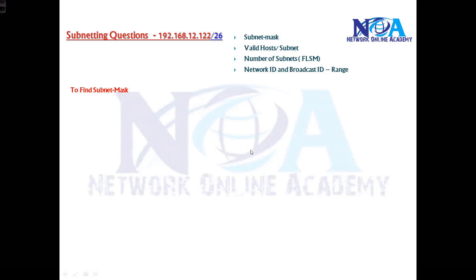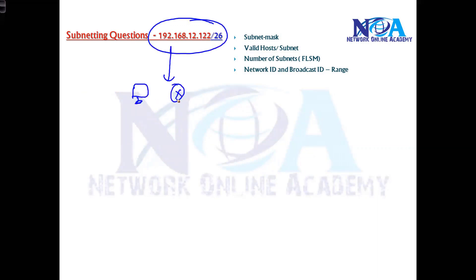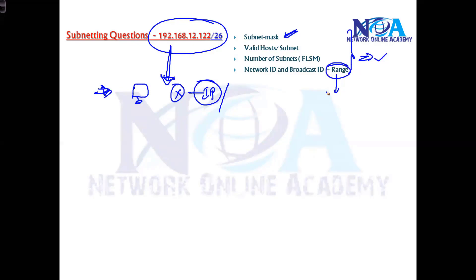We will go with some simple examples first. Let's assume this is your IP — maybe the IP of a PC or a router — assigned to any one of the devices in the network. Now when this IP is assigned, you want to figure out various things: maybe the subnet mask, maybe the range, or maybe the network ID — because when we do routing advertisements and get into routing topics, we need the network ID to advertise and write a route on the router. Or maybe you want to know the broadcast ID, the last IP of the range, or the range of IPs.